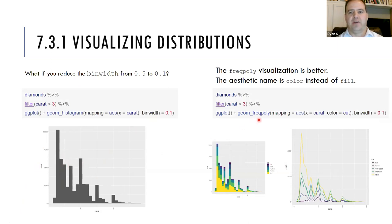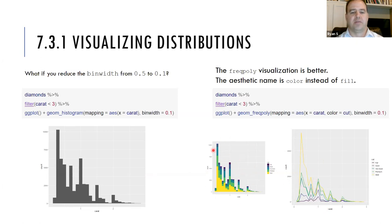We also looked at frequency poly to show one continuous variable that was also categorized by color using a categorical variable. This frequency poly was an improvement over the histogram there.